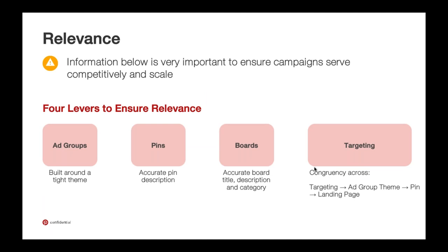Relevance is a big thing. When a pin goes into our ecosystem, our organic algorithm and promoted algorithm will systematize it and make sure we're targeting relevant ads. Ads that aren't relevant — for example, if we were searching gummy bears and we served a weight loss ad — that's a highly irrelevant ad that'll get penalized in our auction. We want to be very cognizant of what we're targeting, because our system will naturally suppress things that aren't designed well, have inaccurate pin descriptions, or inaccurate board descriptions.